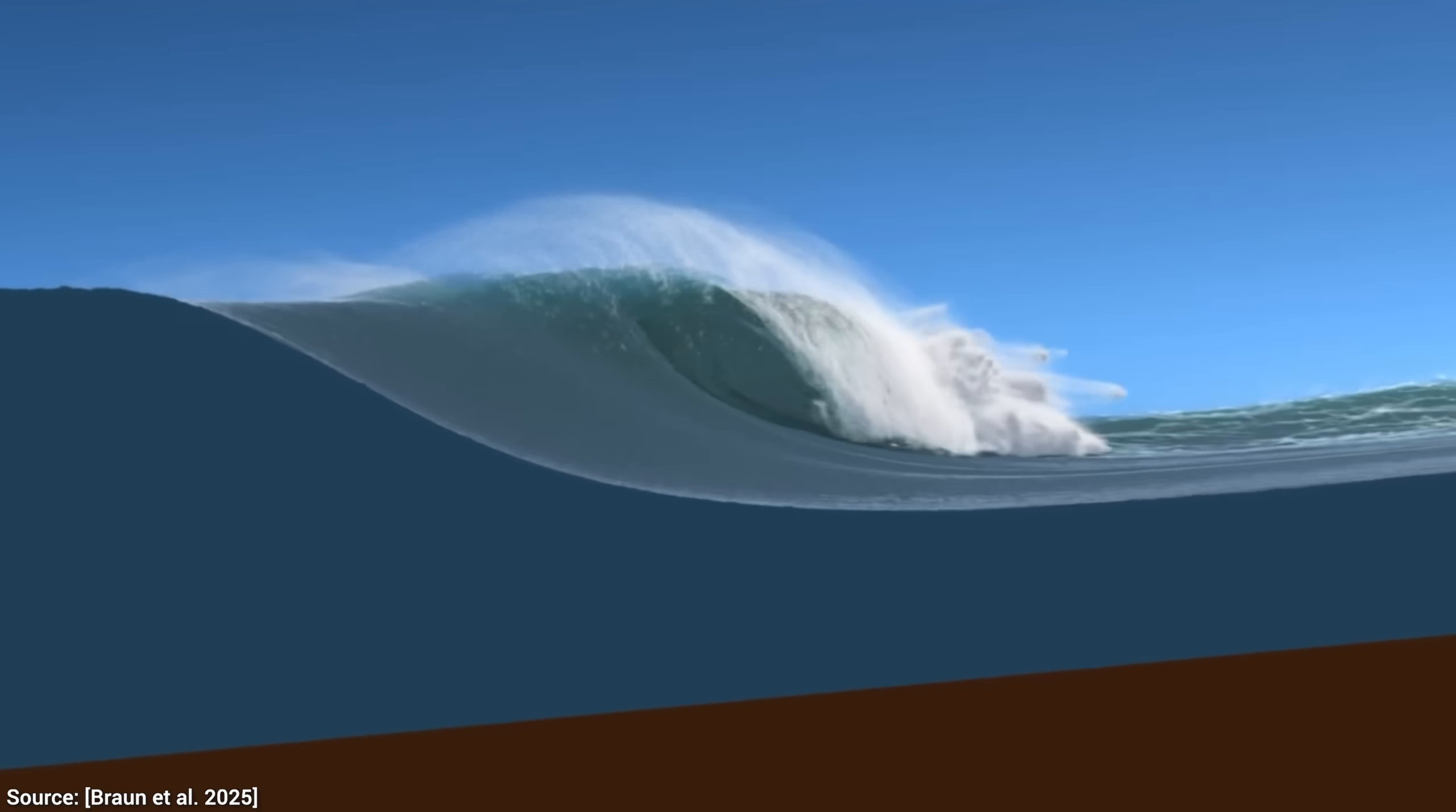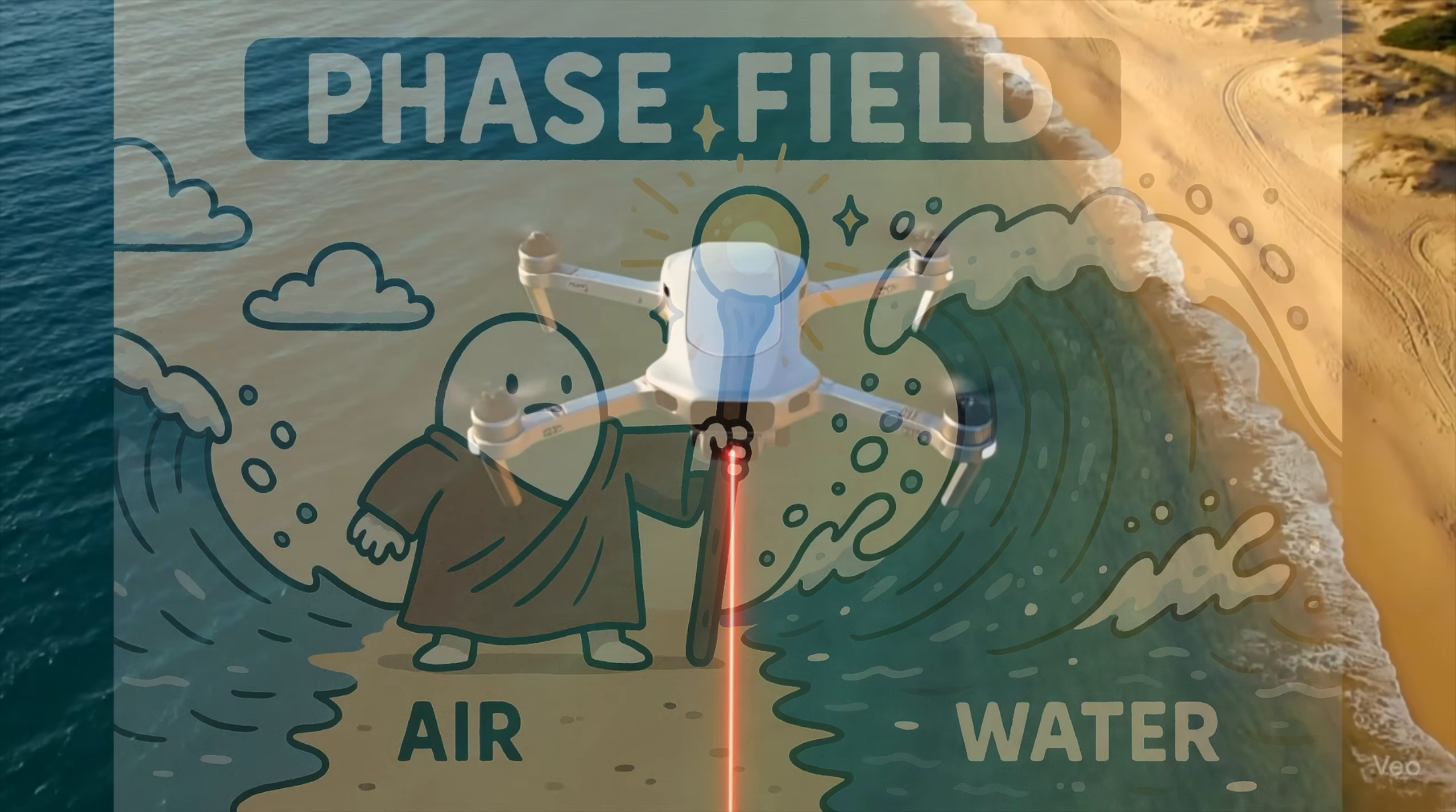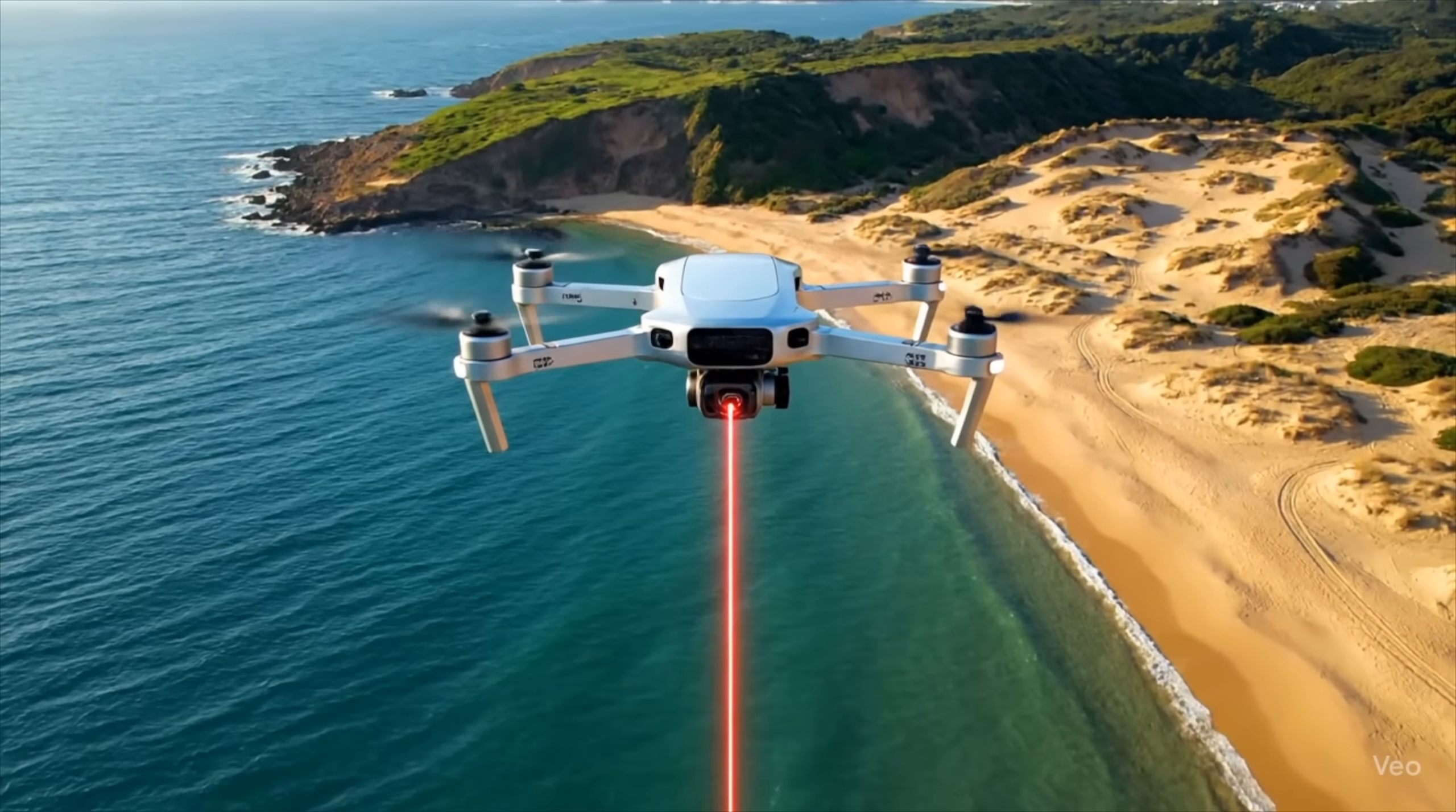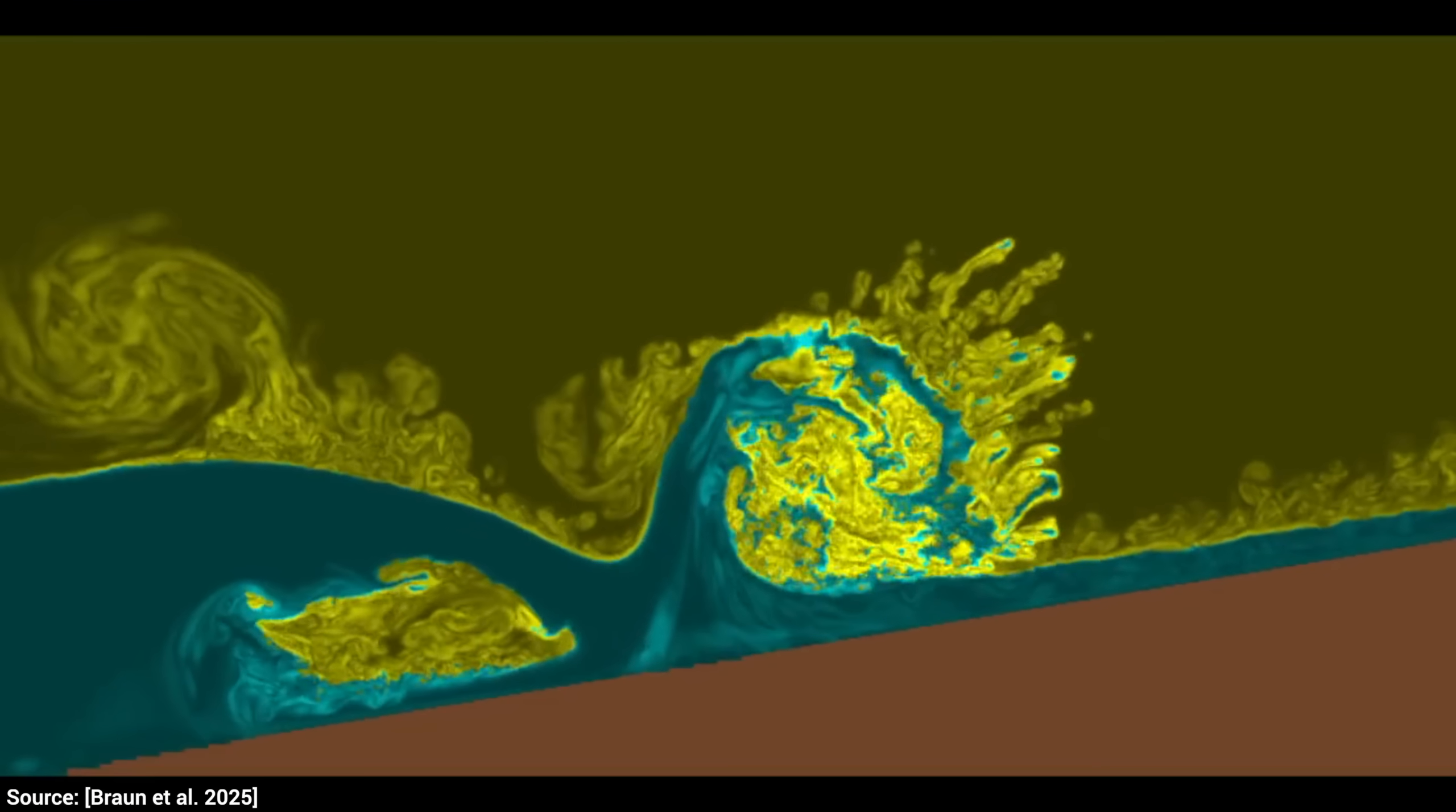Two, it uses a phase field to naturally separate air and water. No more manually tracing the shoreline. It's like having a smart drone that automatically draws the border between land and sea every frame, so you always know where the splash ends and the air begins.